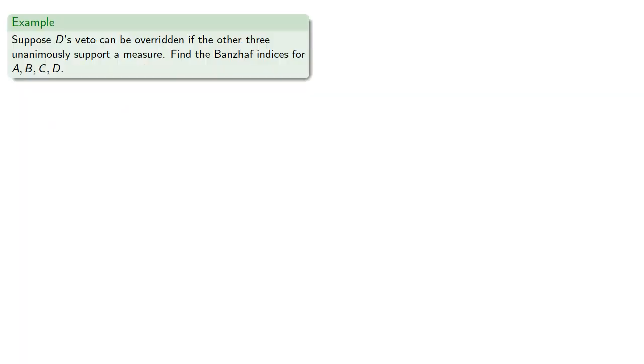Now in most situations where somebody has veto power, there's also a way to override the veto. So suppose D's veto can be overridden if the other three unanimously support a measure.